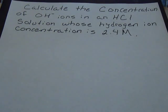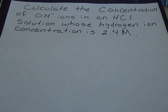So the problem reads, calculate the concentration of OH ions in an HCl solution whose hydrogen ion concentration is 2.4 M.